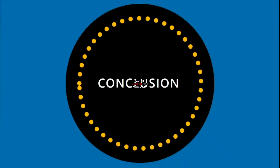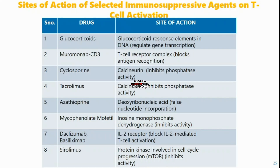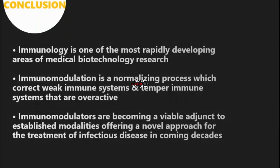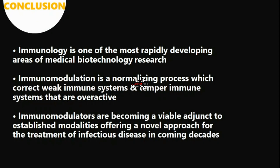Now we have reached the end of this presentation, that is the conclusion. These are the sites of actions of selected immunosuppressive agents on T cell activation that we have discussed earlier. Immunology is one of the most rapidly developing areas of medical biotechnology research. Immunomodulation is a normalizing process which corrects weak immune systems and tempers immune systems that are overactive. Immunomodulators are becoming a viable adjunct to established modalities, offering a novel approach for the treatment of infectious diseases in coming decades.